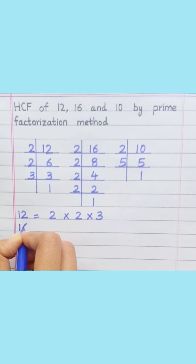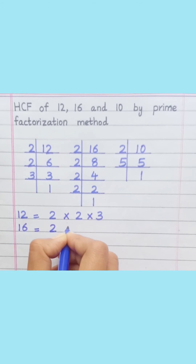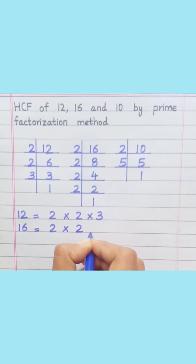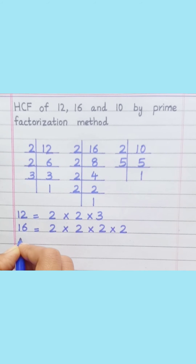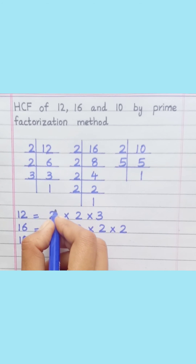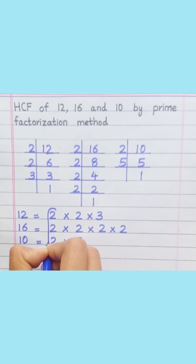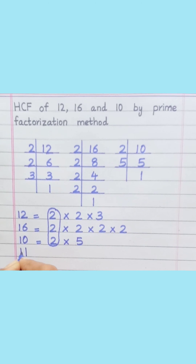16 equals 2 multiply 2 multiply 2 multiply 2. 10 equals 2 multiply 5. Loop the factors that are common to all of the given numbers. HCF equals 2.